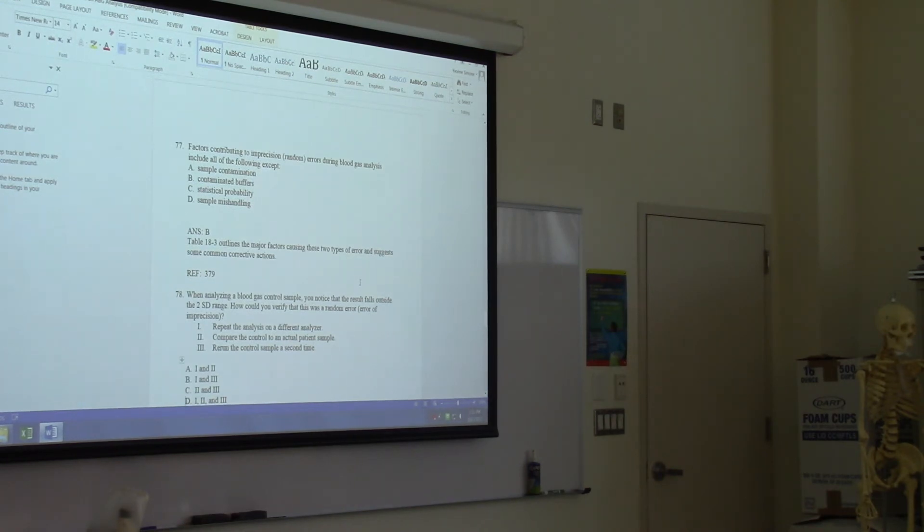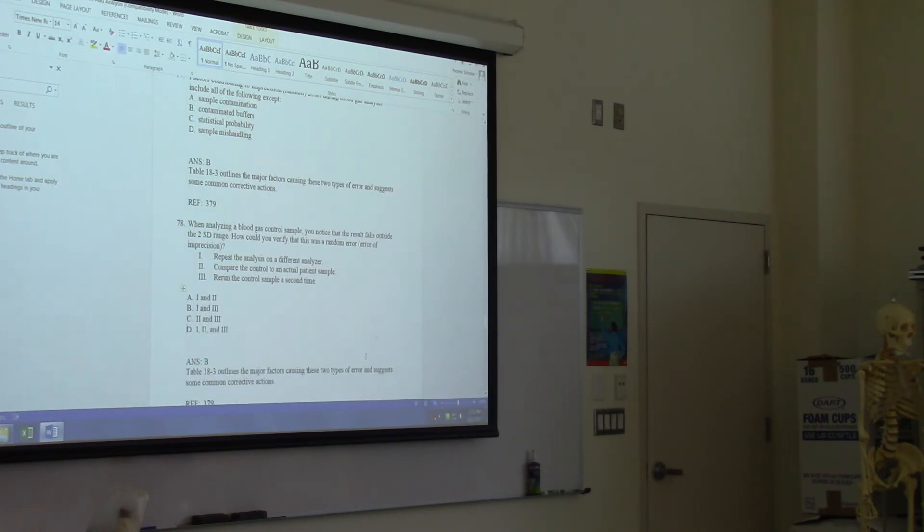All right, so you analyze a blood gas control and it falls outside the two standard deviations. How could you verify that this was a random error? Do you repeat the analysis on a different analyzer, compare the control to an actual sample, or run the control sample a second time? Yeah, I would say number three only, but that's not a choice. We don't know an actual patient sample, so number two is definitely out. So B. Yay!